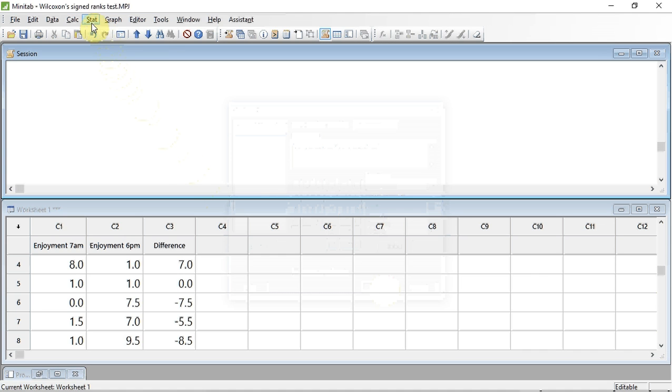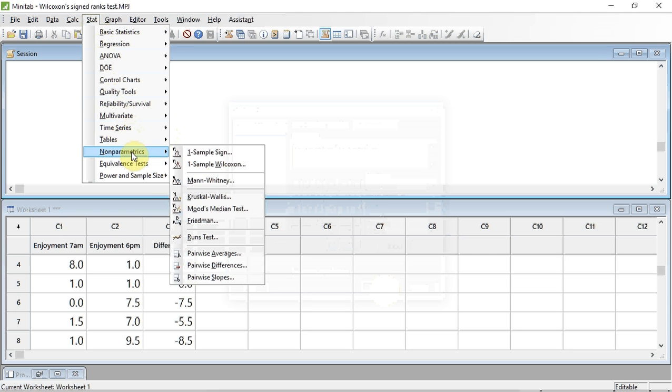We track up to Stat and click. We track down to Non-Parametrics and then 1 Sample Wilcoxon.